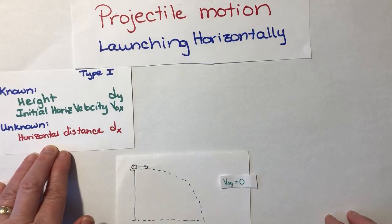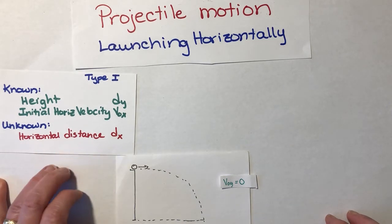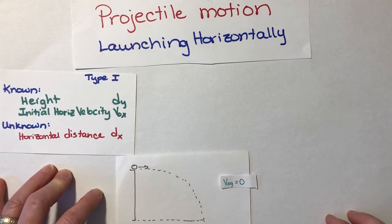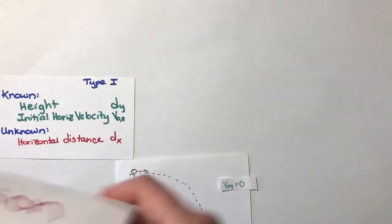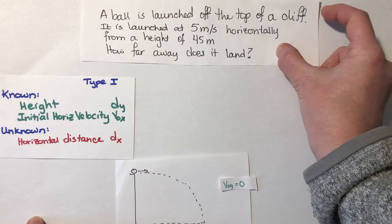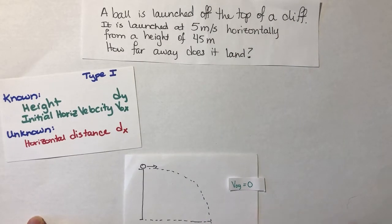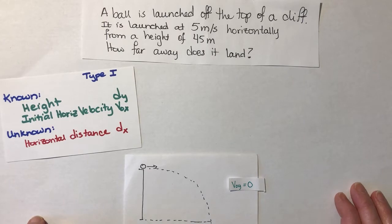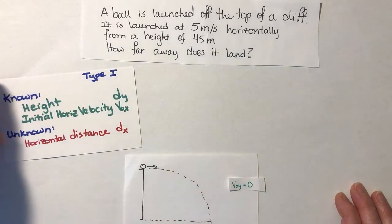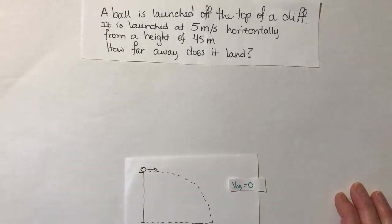Okay, so like I said, for this one, I'm going to know the height and the initial velocity, but I don't know the horizontal distance. So let's take a look at our first sample question. For this question, a ball is launched off the top of a cliff. Today, it's all about cliffs. Ball is launched off the top of a cliff. It is launched at 5 meters per second horizontally. And the question asks, how far away does it land? So let's take a look at that.